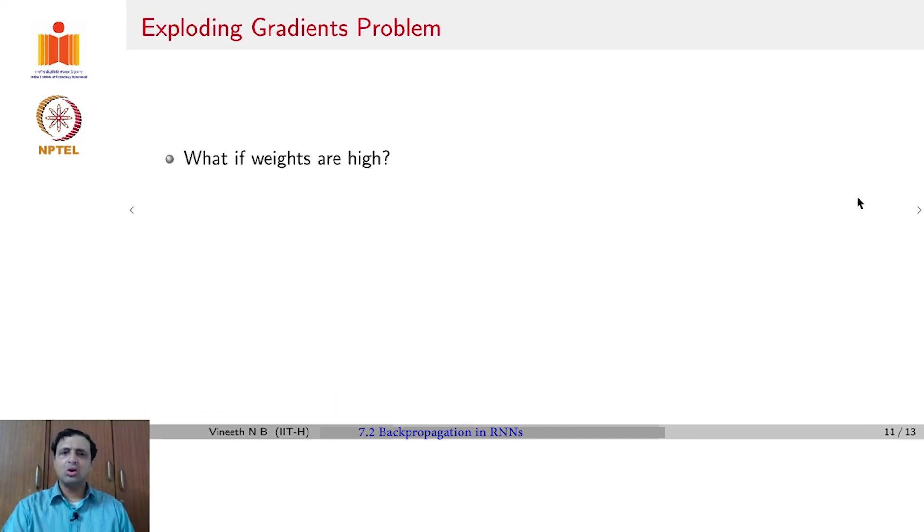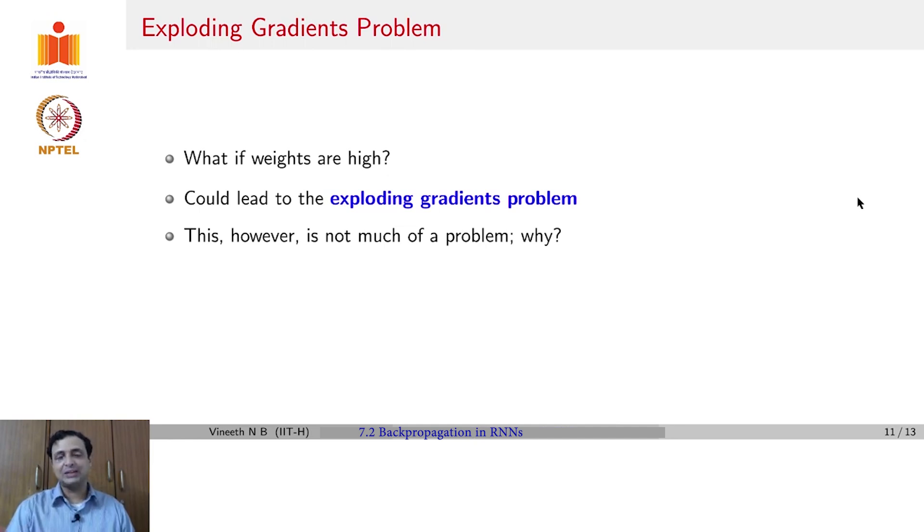But before we go there, let us ask the counter question. What if I did not use a sigmoid activation function? What if I just use a linear activation function? Let us assume, on the contrary, that each of my gradients ∂H_3/∂H_2 or ∂H_2/∂H_1 were very high values. Then multiplying all of them could lead to what is known as the exploding gradient problem, because the product of values say in the range of 10, by multiplying 3 such values, you will quickly go to 10^3 magnitude. And that can lead to an exploding gradient problem.